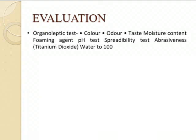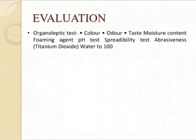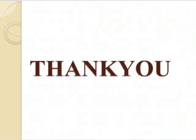Now let's see how to evaluate toothpaste. The evaluation parameters include color, odor, fragrance, taste, moisture content, foaming ability, detergency, pH test, spreadability test, and abrasiveness. We will discuss these points in detail from an examination point of view. Hope you liked this video and found it understandable. Thank you.